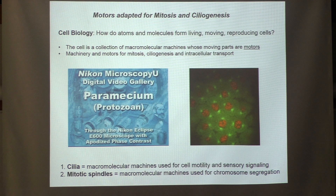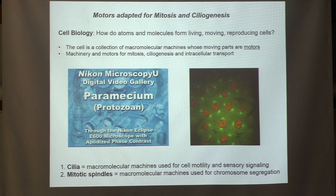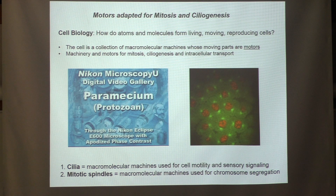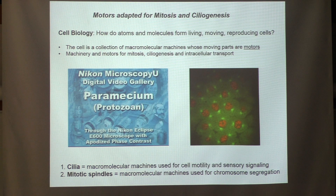These machines range in size from tens of nanometers, like a ribosome, moving along RNA to translate genetic information, to tens of microns — a machine like the mitotic spindle which segregates chromosomes. One remarkable finding during my career is that a helicase moving along DNA shares many common features with a myosin motor contracting muscle. The motors we've focused on are involved in mitosis, ciliogenesis, and intracellular transport.